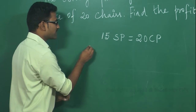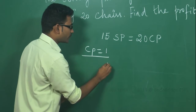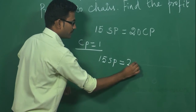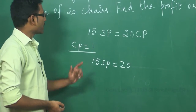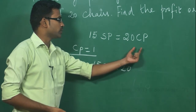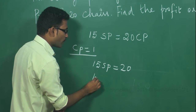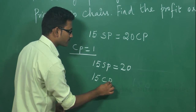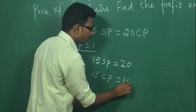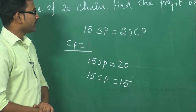Let me consider cost price as 1 rupee. So 15 articles selling price will be 20 into 1, that will be 20. I'm assuming the cost price is 1 rupee, so 15 articles selling price equals 20 rupees. Now I need 15 articles cost price — 15 into 1 rupee gives me 15 rupees.